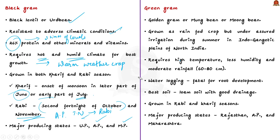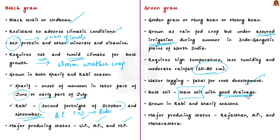Green gram is also known as golden gram, moong bean, or mung bean. This crop is generally grown as rain-fed but under assured irrigation during summer in the Indo-Gangetic plains. The crop needs high temperature but less humidity and moderate rainfall of about 60 to 80 centimetres. Water logging is fatal for root development of this crop, so the best soil is loam soil with good drainage. This crop is also grown in both rabi and kharif seasons. Major green gram producing states are Rajasthan, Andhra Pradesh, and Maharashtra.